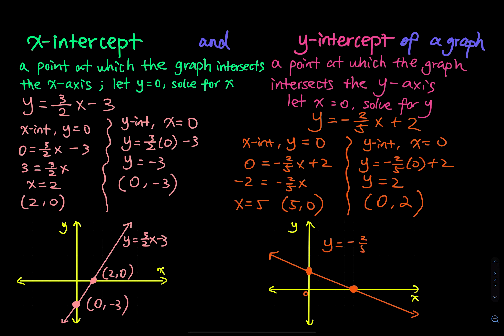This is how you sketch the graph of a linear equation using x and y-intercepts: find the x-intercept, find the y-intercept, plot both points, connect them, and extend the line. The x-intercept is (5, 0) and the y-intercept is (0, 2).